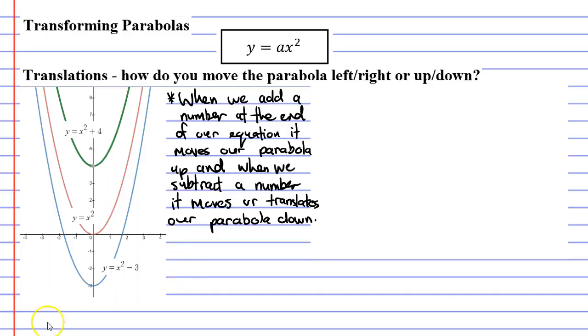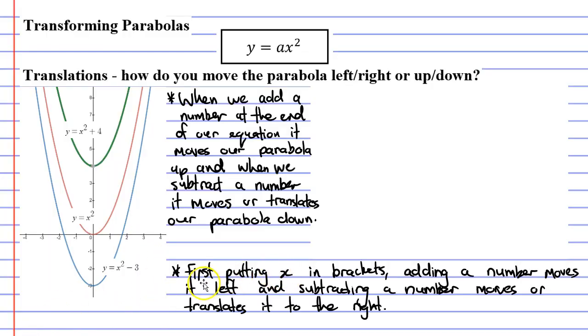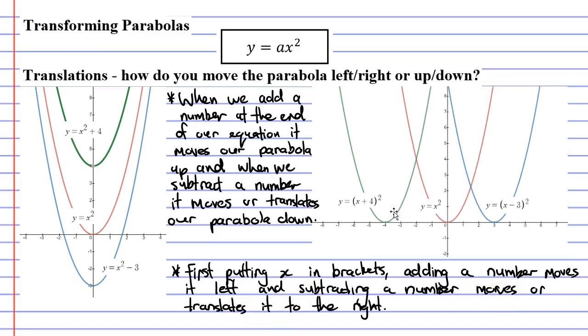Let's make a note about that now. So we'll say that by first putting x in brackets, adding a number moves it to the left, and subtracting a number moves or translates it to the right. And we can see that on our image here, where we added 4, it moved it 4 places to the left. And when we subtracted 3, it moved it 3 places to the right.